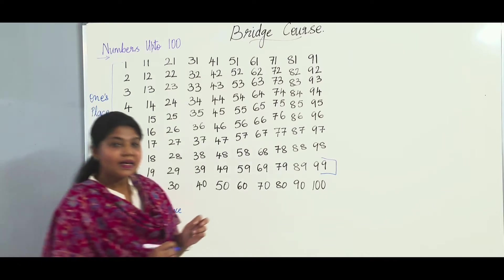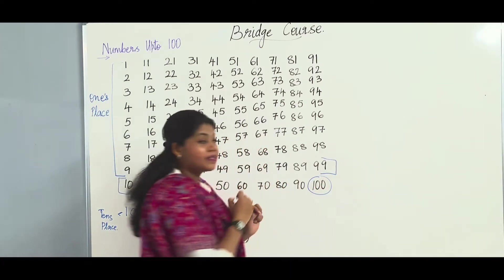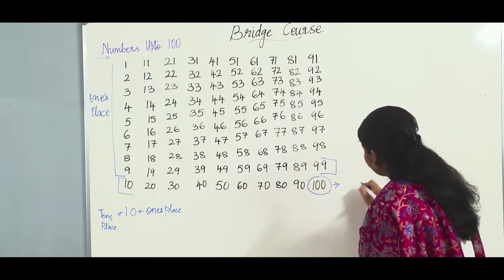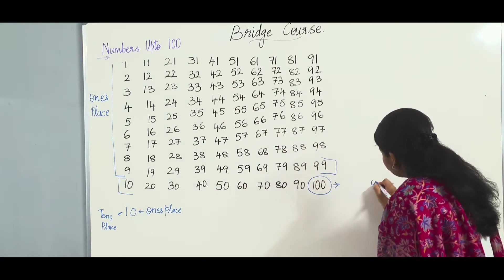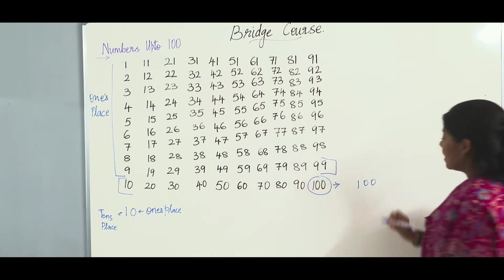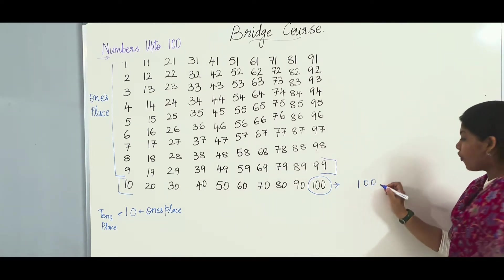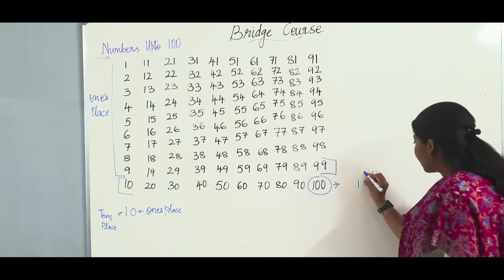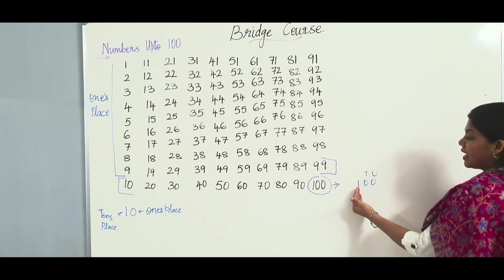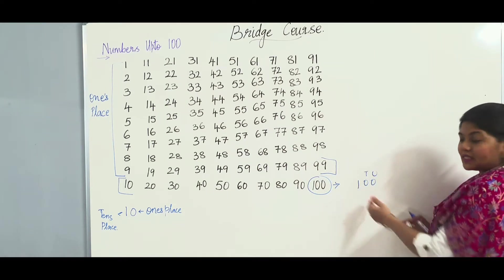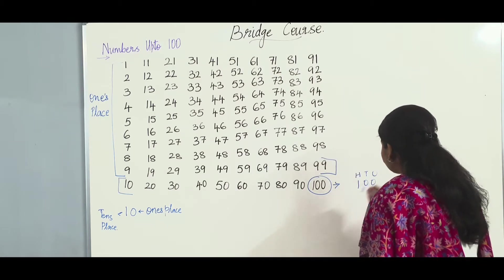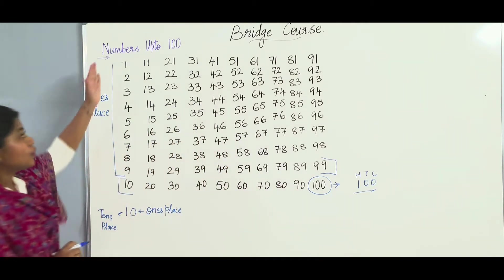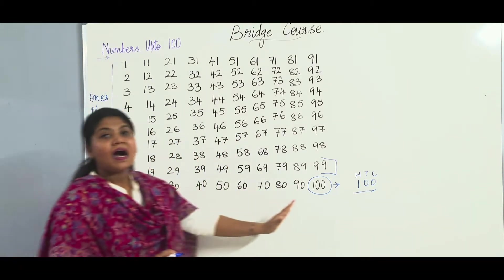And the number 100 is a 3-digit number. The extreme right digit falls in the 1's place, the middle number falls in the 10's place, and the extreme left falls in the 100's place. So now you know the numbers from 1 to 100.